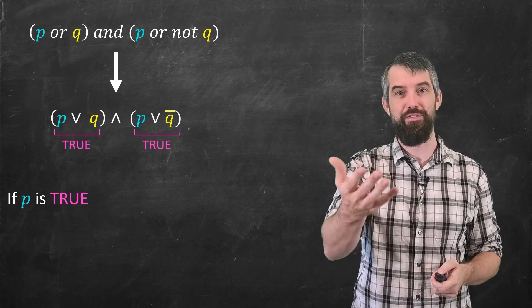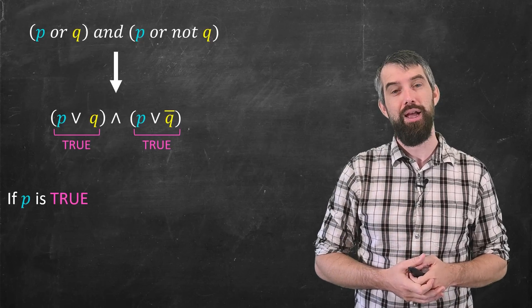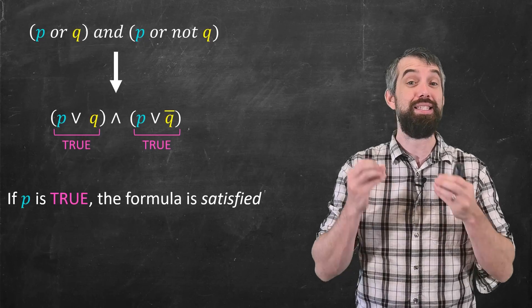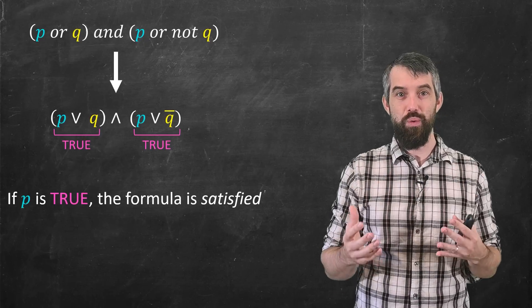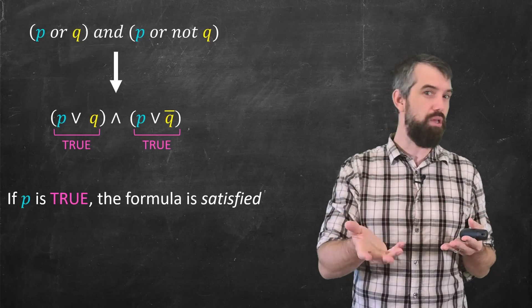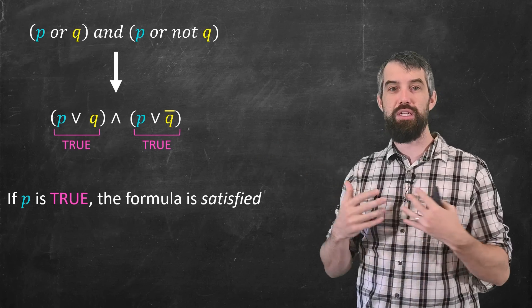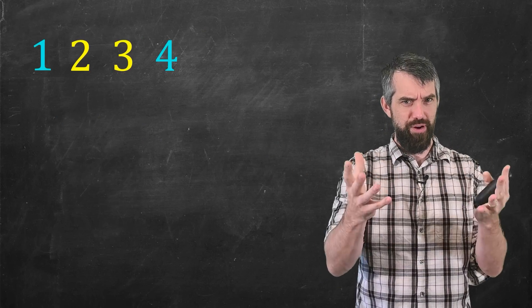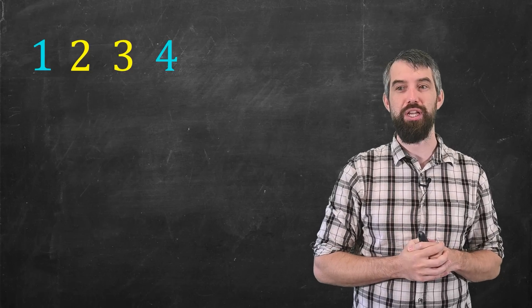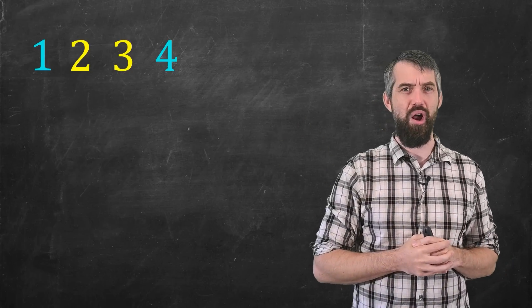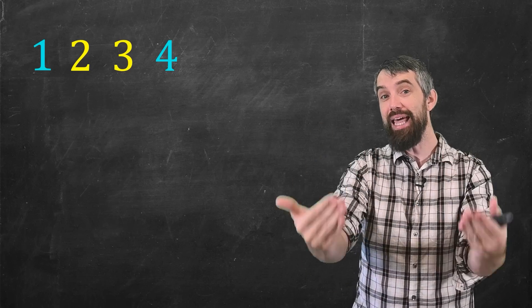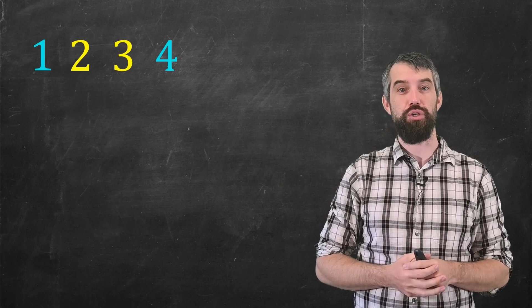The whole thing is going to be true if P is true. And the fancy way of saying this is that I will say that the formula is satisfied. That is, when I assign P to be true and Q can be anything, you plug those into this formula, the formula evaluates to true, it is satisfied. So that's our very brief review of propositional logic. Now I want to take our problem that we have, coloring numbers, and translate it into one of propositional logic.